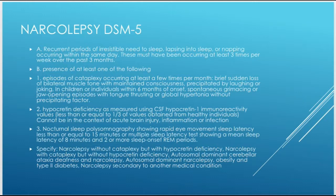For criterion B, the presence of at least one of the following is required. Episodes of cataplexy occurring at least a few times per month, defined as a brief sudden loss of bilateral muscle tone with maintained consciousness, precipitated by laughing or joking in many cases. In children or individuals within six months of onset, spontaneous grimacing, jaw opening episodes, tongue thrusting, or global hypertonia without precipitating factors.